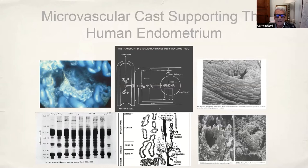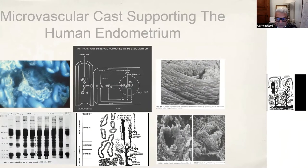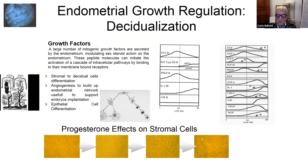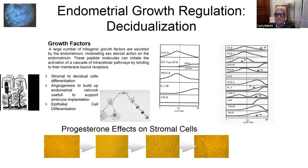That happens when progesterone is produced or administered adequately for time and for quantity. Progesterone induces the majority of the biochemical modifications of the process called decidualization. The process consists in differentiating mesenchymal undifferentiated cells into stromal cells or decidualization, depending on the presence or absence of progesterone.